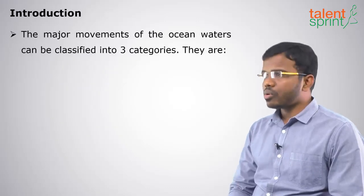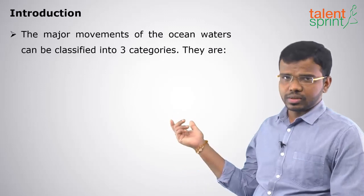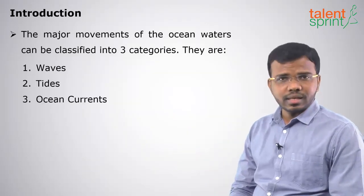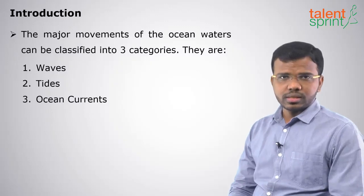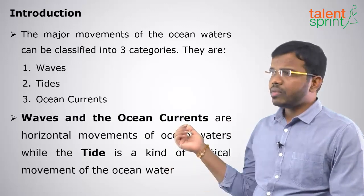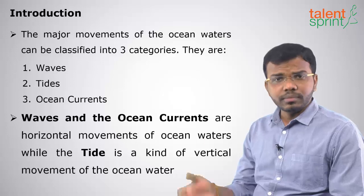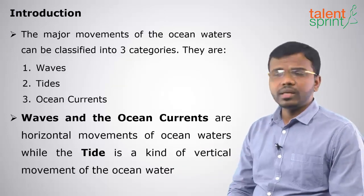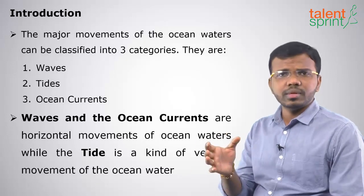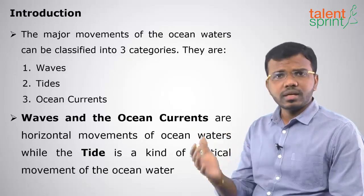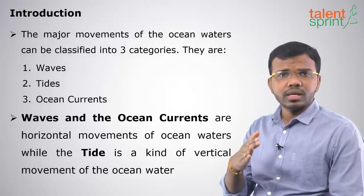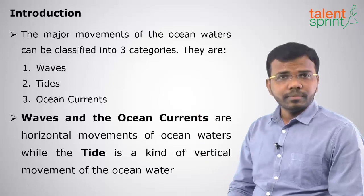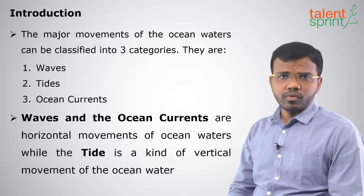The major movements of the ocean waters are divided into three categories: waves, tides, and ocean currents. The major difference between them is that waves and ocean currents are the horizontal movements of water, but the tides are the vertical movements of ocean water.